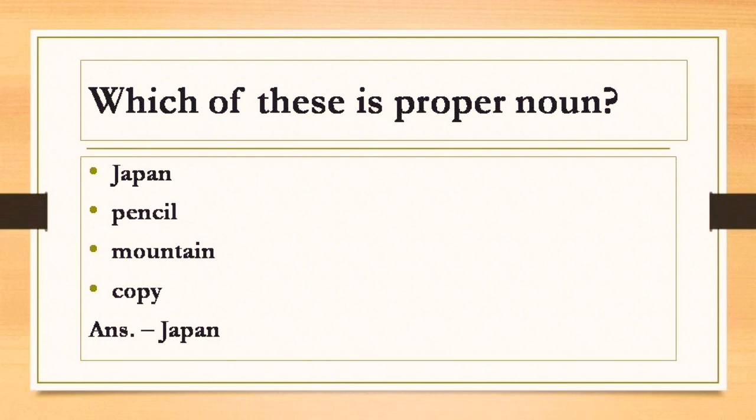Which of this is a proper noun? To find out the correct answer, you have to go through all the options because more than one option can be correct. Let's see the options: Japan, pencil, mountain, copy. The answer is Japan because it is the name of the country and it is written with a capital letter.